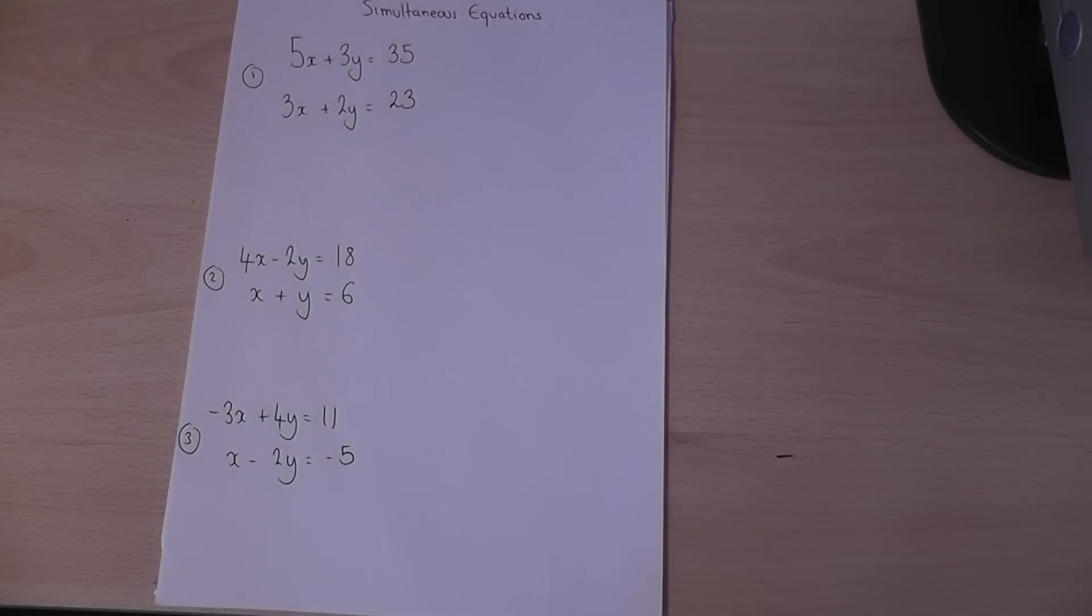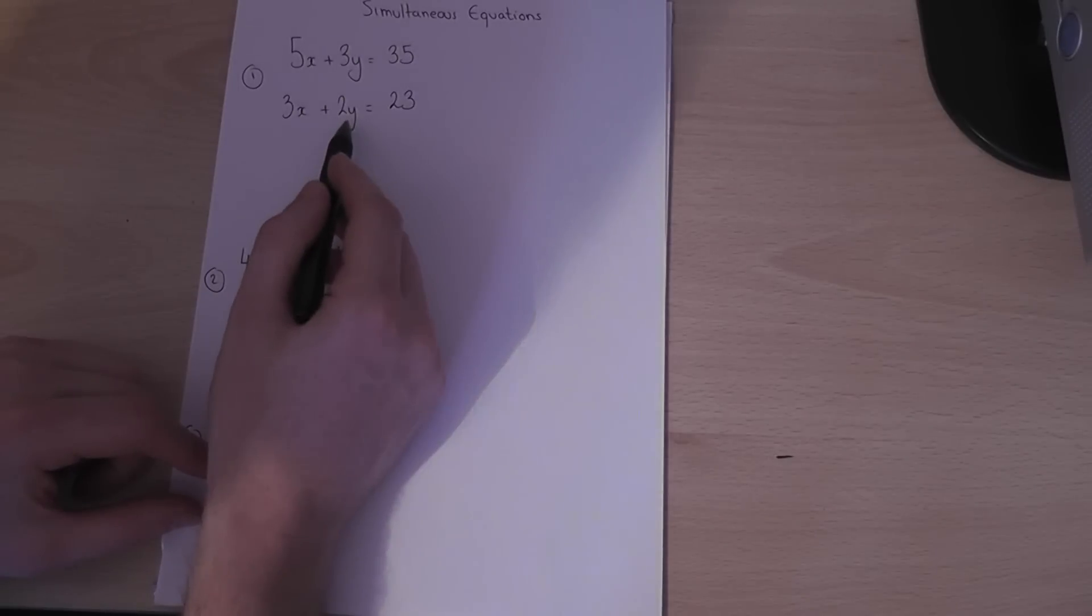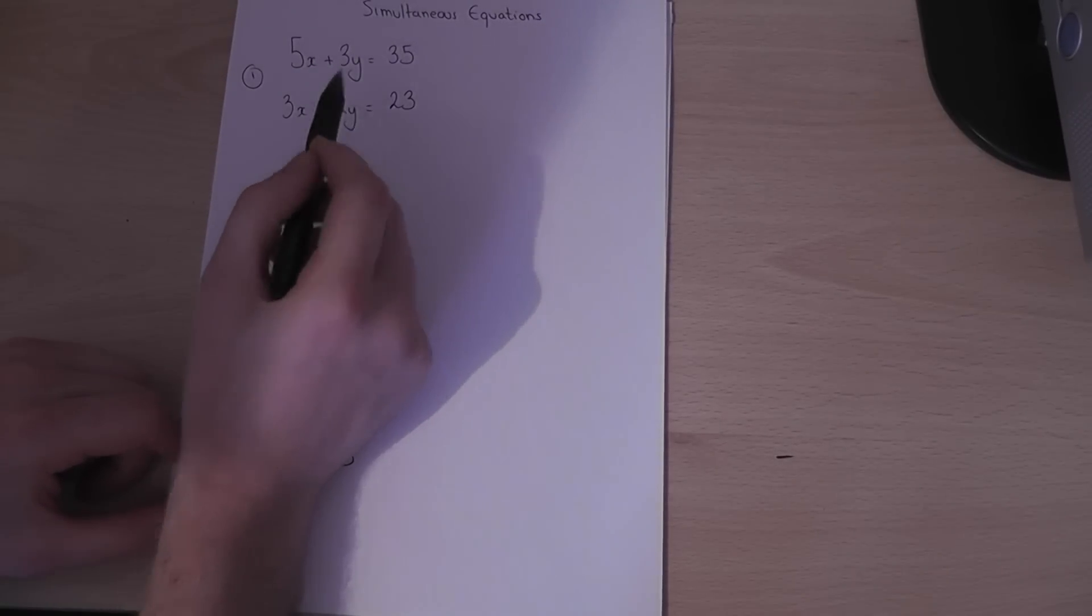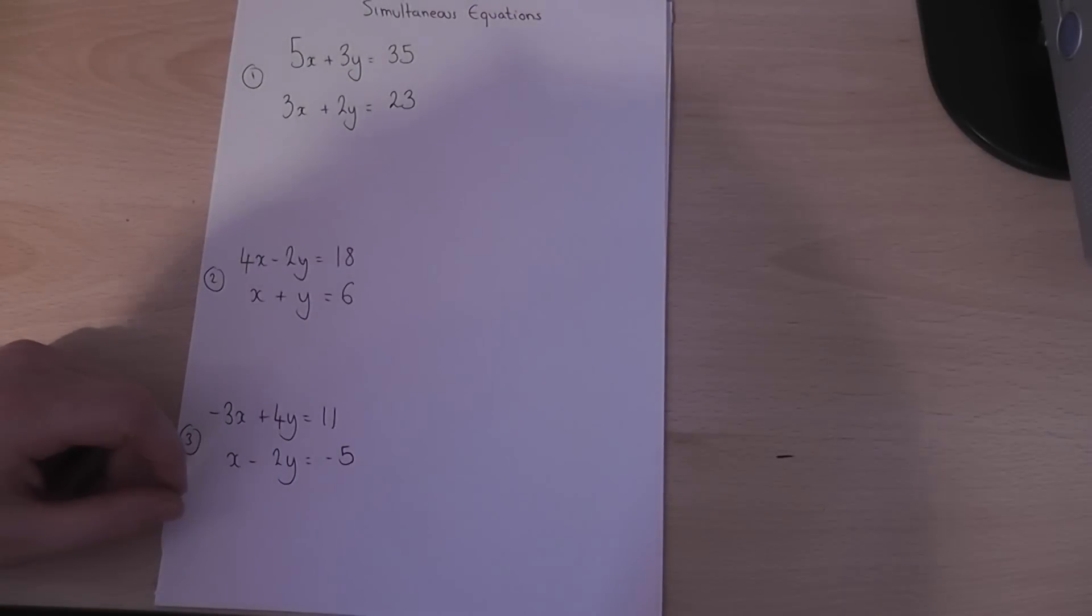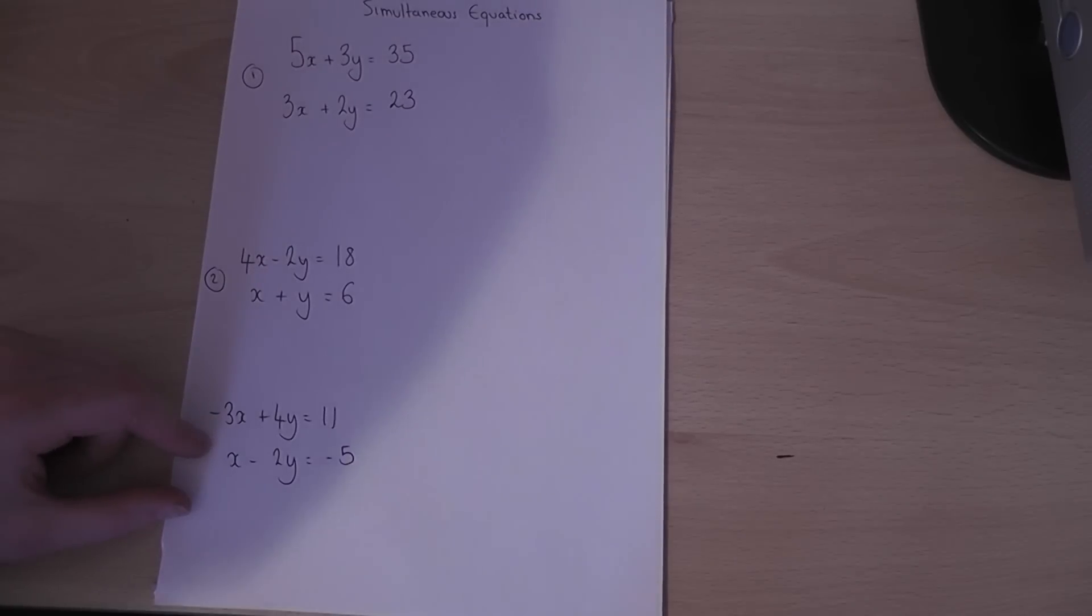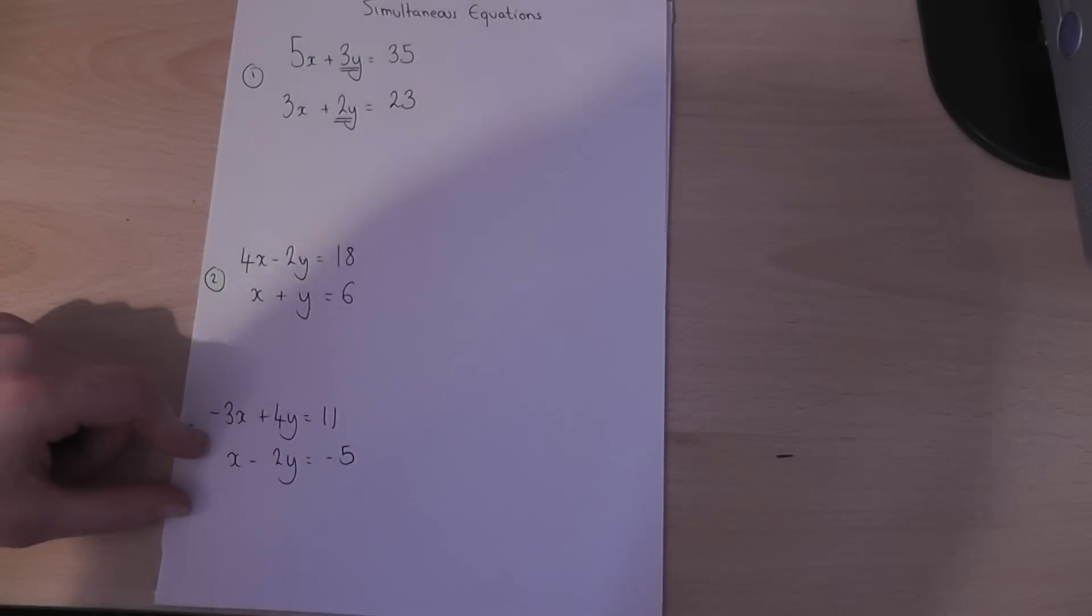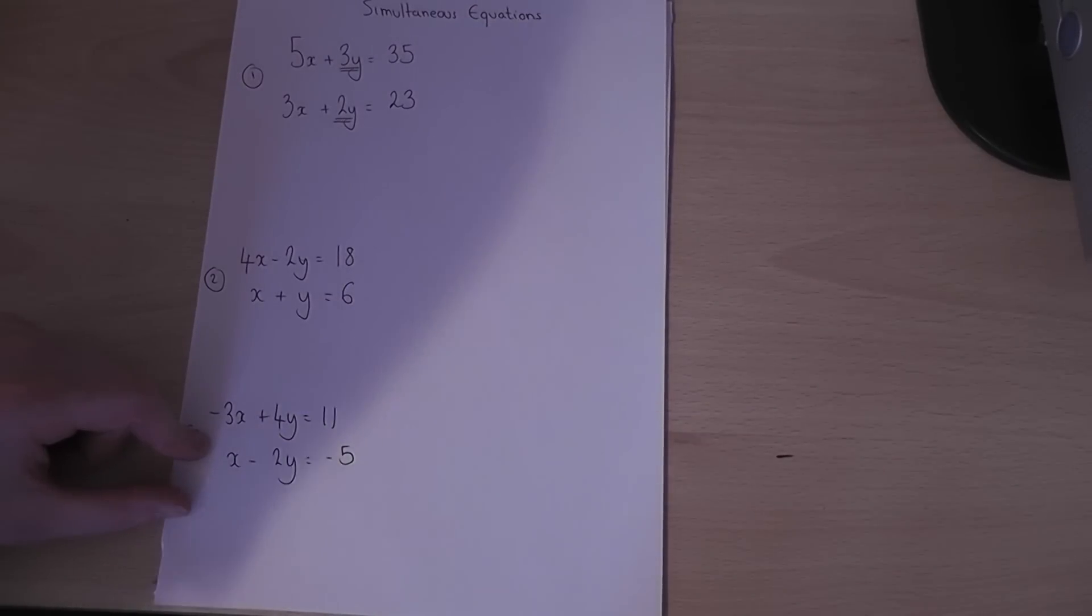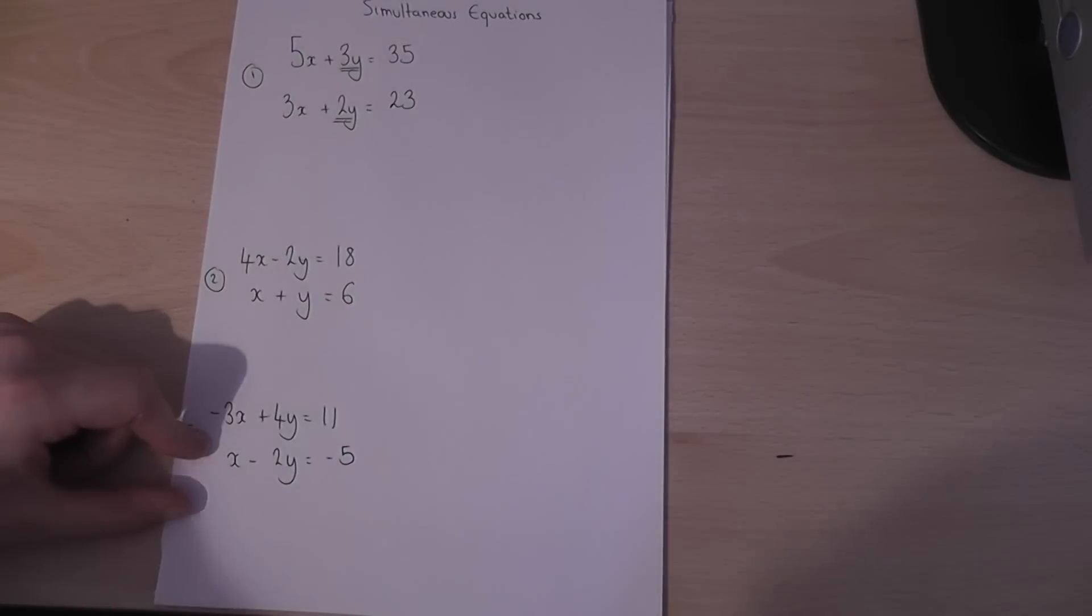This video looks at five examples of simultaneous equations. In simultaneous equations we have two equations with two unknown letters. There are various ways of solving these equations and I'm going to suggest one way of approaching it. First of all, look at the y part of the equation.